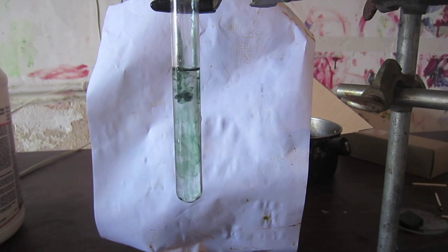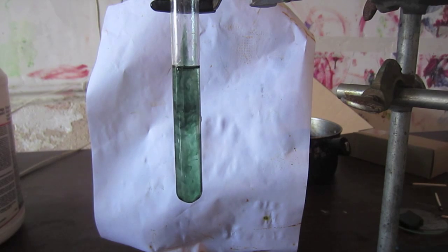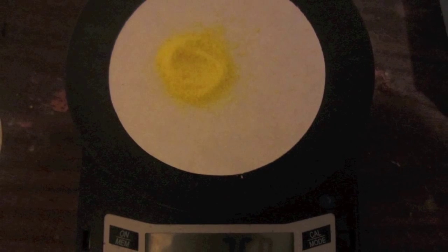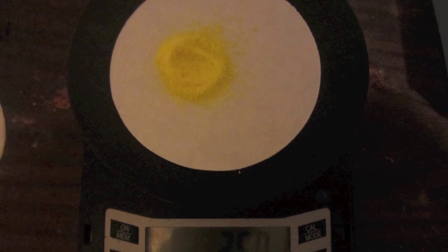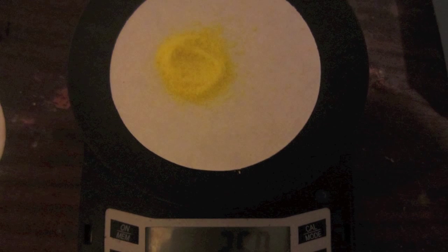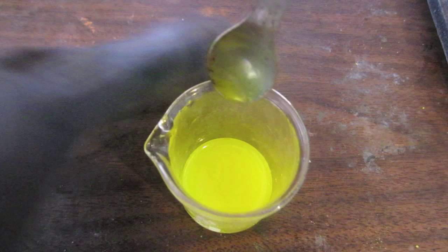Other than plus three, the next most common oxidation state of chromium is plus six. Chromium plus six is a nice yellow color. Here is potassium chromate, a salt featuring chromium in the plus six oxidation state. Here it is dissolved in water. So really nice yellow.